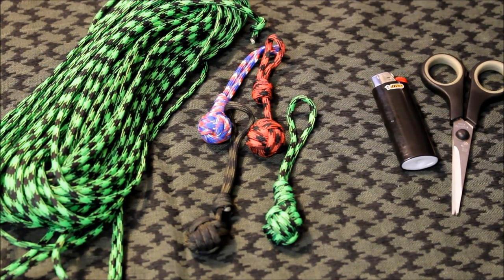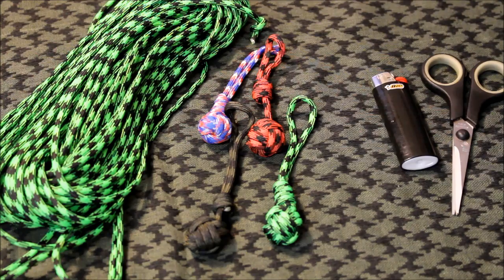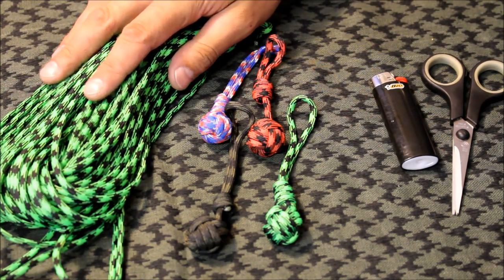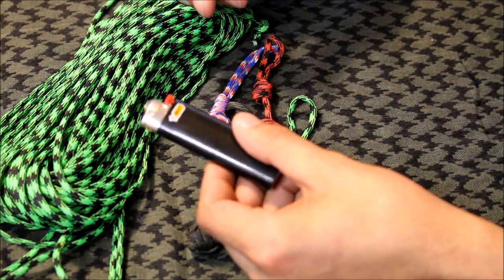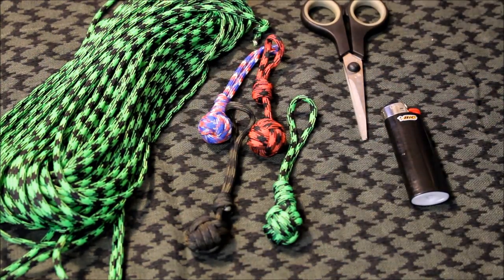Alright, so to make a monkey fist key fob, you only need a couple things. One is paracord, obviously. A pair of scissors and a lighter. That'll be all you need.